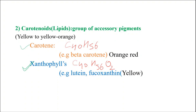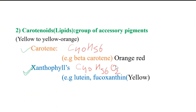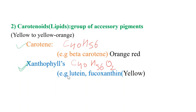Next are carotenoids. These are basically lipid derivatives and are a group of accessory pigments, meaning they are helping pigments. In the color range, they go from yellow to yellow-orange and are divided into two parts: carotene, with chemical formula C40H56, and xanthophyll, with formula C40H56O2. An example of carotene is beta-carotene, which is orange-red in color. An example of xanthophyll is lutein and fucoxanthin, which are yellow in color. These are the pigments you find in orange and reddish colored fruits and vegetables.